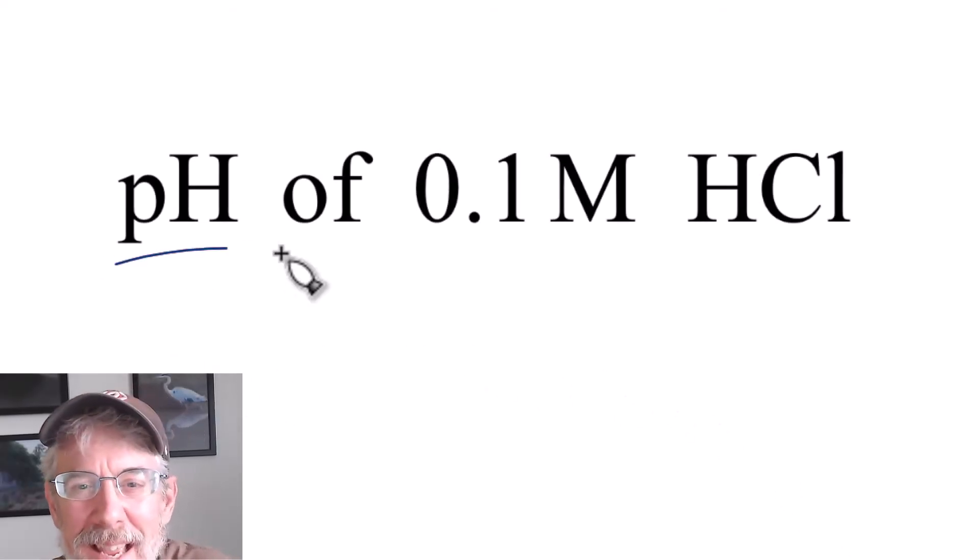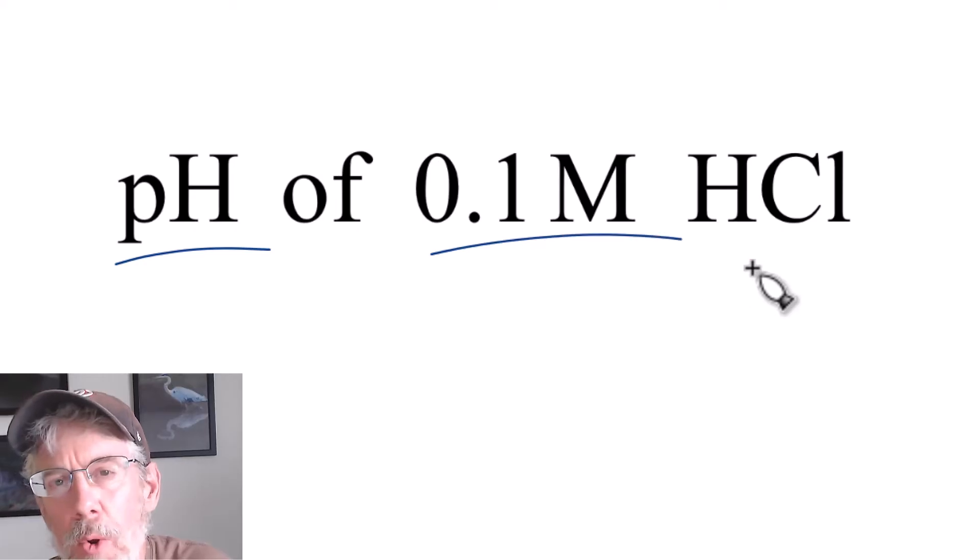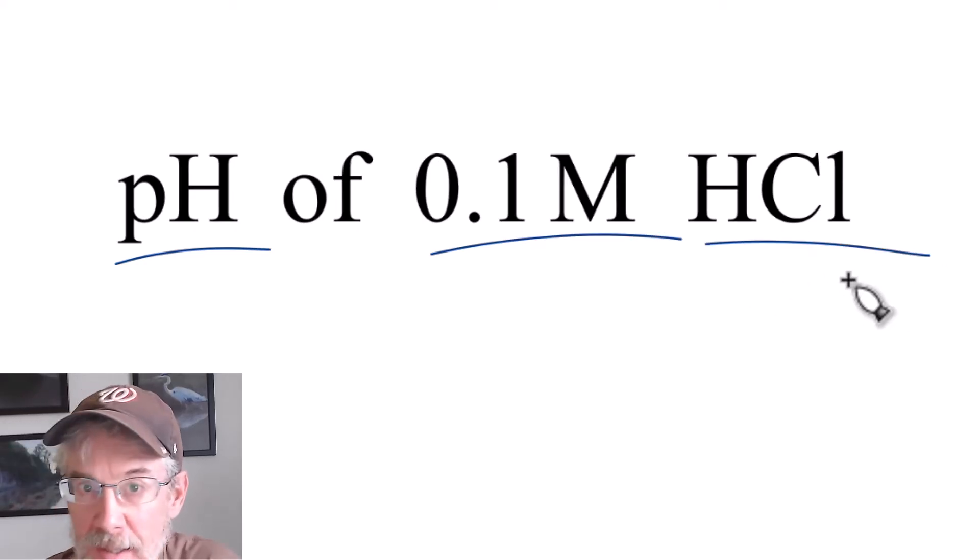All right, let's find the pH of a 0.1 molar solution of HCl. That's hydrochloric acid.